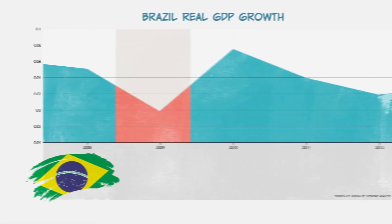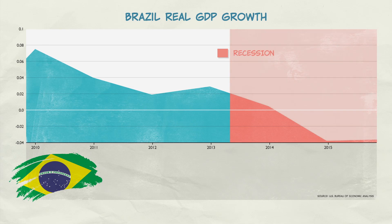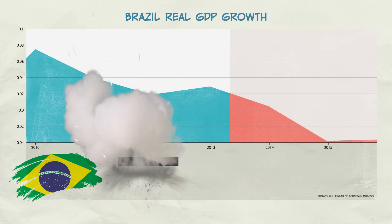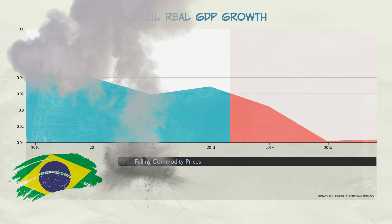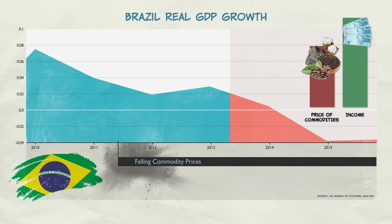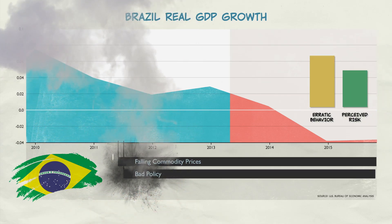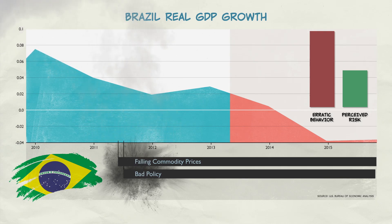Real business cycle theory can also apply to the present day. Consider the economy of Brazil, where GDP has declined by more than five percent over the last two years. The negative shocks have been, first, falling commodity prices — Brazil exports commodities like soybeans, cotton, coffee, and minerals, which are bringing in lower prices on world markets, meaning lower incomes for many Brazilians. Second, bad policy: the Brazilian government has been erratic and unpredictable, increasing the level of perceived risk in the Brazilian economy.